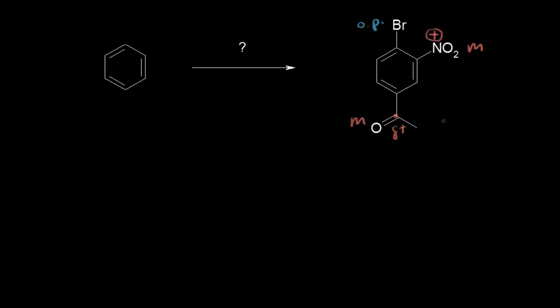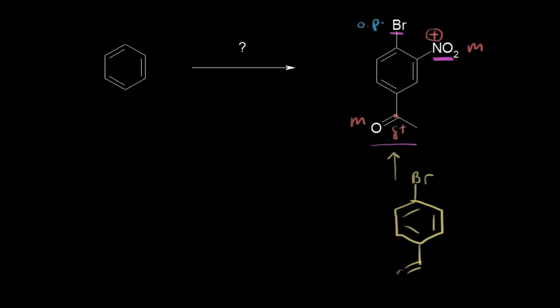When we look at those groups and think about which reaction was done last, it makes sense that the nitration was done last. The nitro group is meta to our acyl group because the acyl group is a meta-director. And more importantly, the bromine is an ortho-para-director, and the nitro group is ortho to the bromine. So the last reaction was a nitration. To draw the precursor, we take off the nitro group, leaving a benzene ring with a bromine and an acyl group.